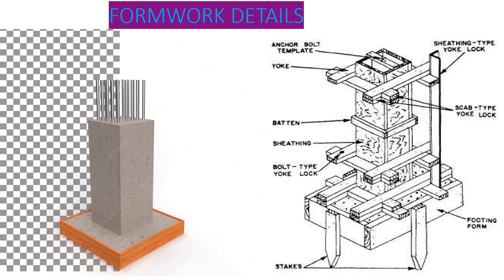The column we are going to calculate quantities for is 0.45 meters length by 0.35 meters width, with a height of 3.0 meters. As you can see from the drawing, we have the yoke, the button, and the sheeting. This drawing shows how the elements are structured so they can form the formwork.